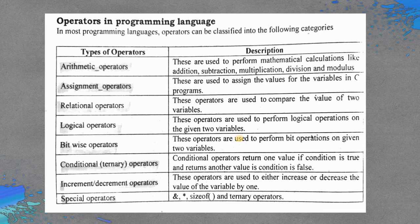The conditional or ternary operator is very important. Conditional operators return one value if the condition is true and another value if the condition is false. It is essentially a one-line if-else structure, which is very useful for writing code in a shorter manner with fewer lines.